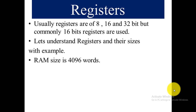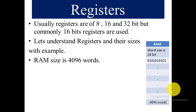As we discussed in previous lectures on cache memory, we understood the concept of memory in detail. Now we will take the same example. The RAM size — that is the primary memory — is 4096 words. We split the RAM into equal-sized blocks, and each block size is 16-bit, meaning each block holds one word of 16 bits.